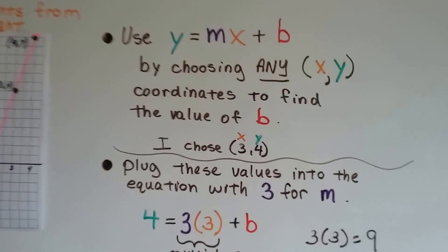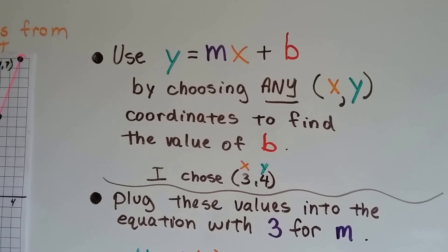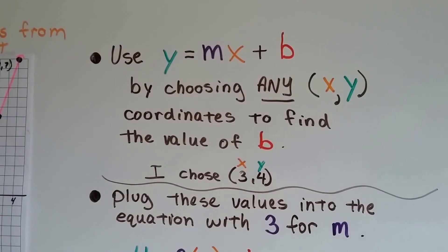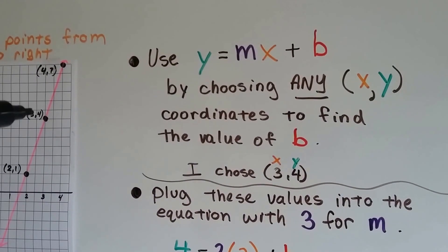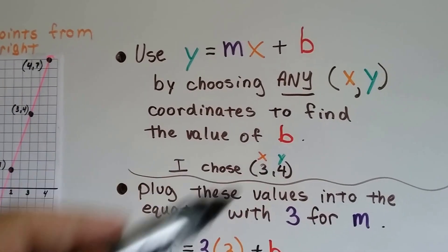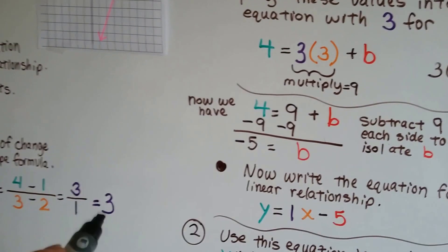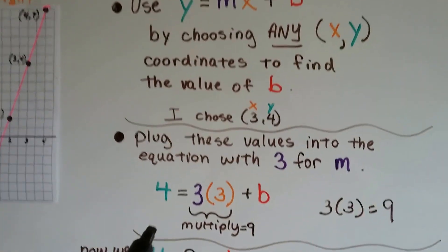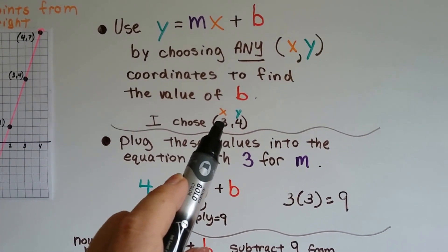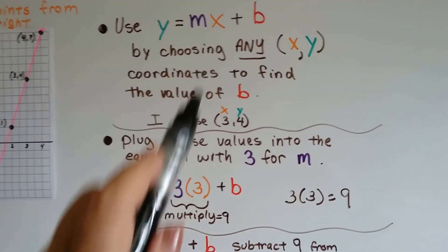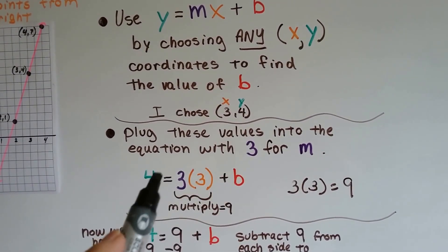We're going to use that. We're going to use the slope intercept form y equals mx plus b by choosing any xy coordinates to find the value of b. So I chose 3 comma 4. That's the x and y values. We plug these values into the equation with that 3 we found for the slope. So m is the slope. And our values for x are 3. That's going to go there. And our value for y is going to be a 4. So that's going to go there.